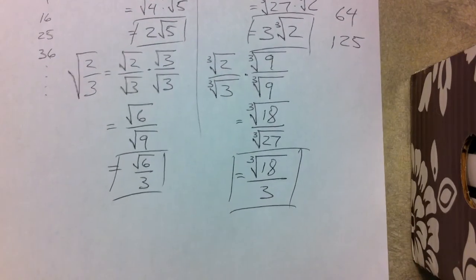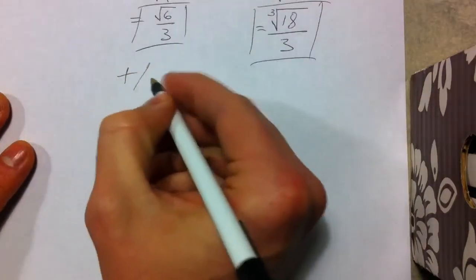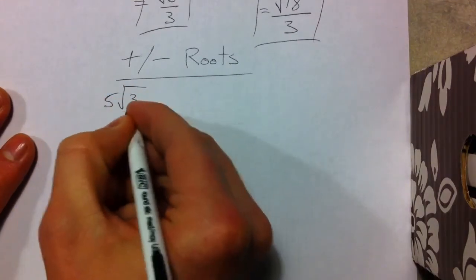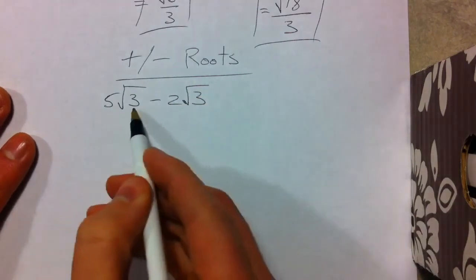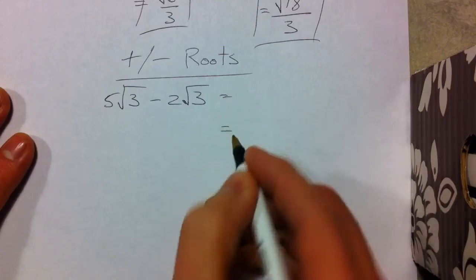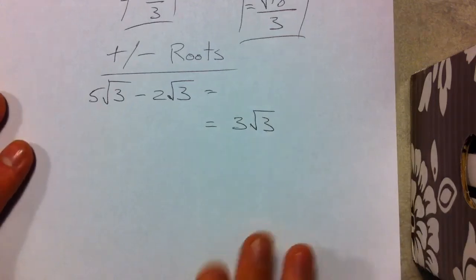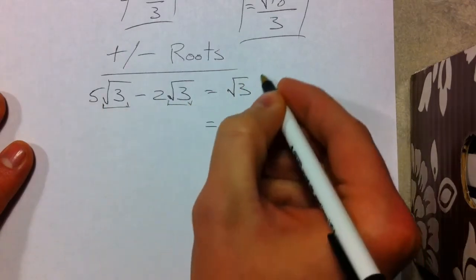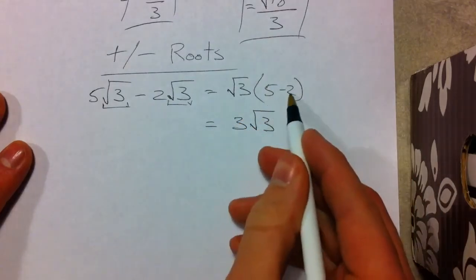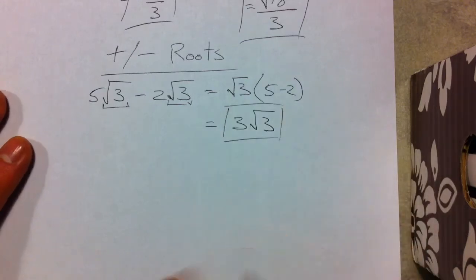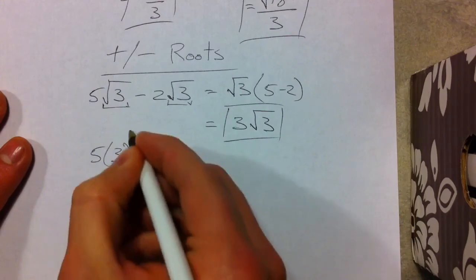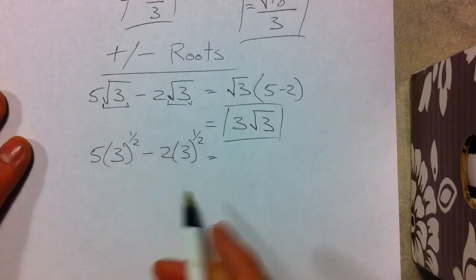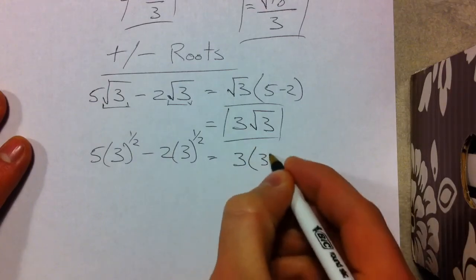We can also add and subtract some roots. Adding and subtracting roots is all about just having like terms — treating it just like x's. If we had 5 root 3 minus 2 root 3, think of it as 5x minus 2x, which is just 3 root 3. The reason: you can factor out a root 3 from both terms, leaving 5 minus 2, which is 3. The same thing works written as 5 times 3 to the 1/2 power minus 2 times 3 to the 1/2 power — it's just a different notation, still giving 3 times 3 to the 1/2 power.